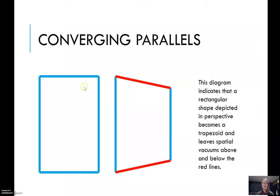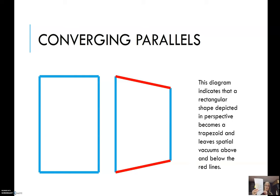Here we have the converging parallels again — here we have the rectangle, but when you turn that image, the lines on top that were parallel now basically don't look parallel. This diagram indicates that a rectangular shape depicted in perspective becomes a trapezoid and leaves spatial vacuums above and below the red lines.